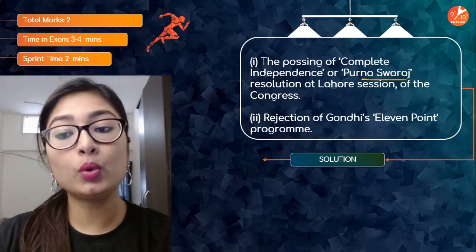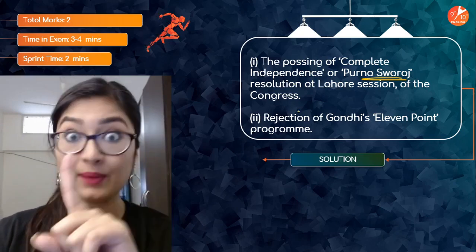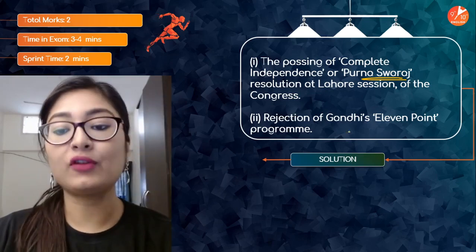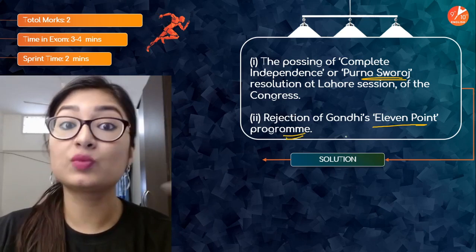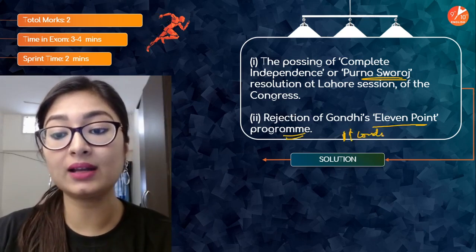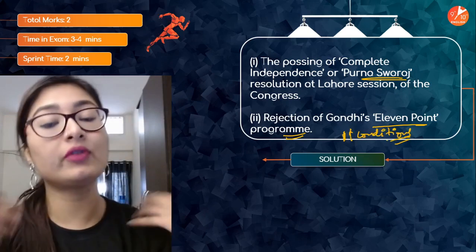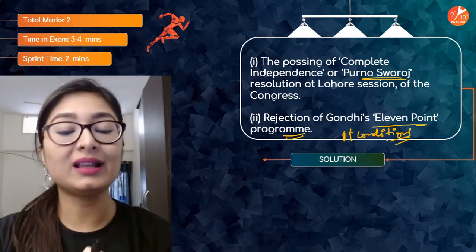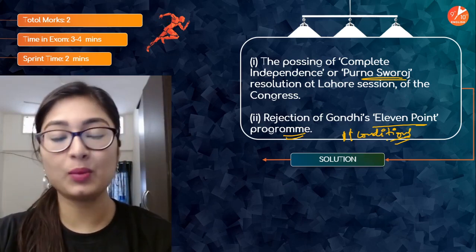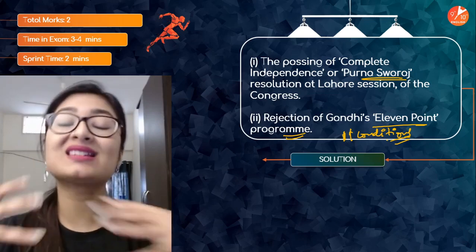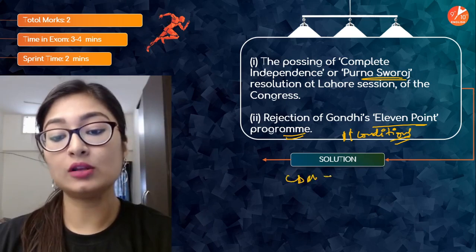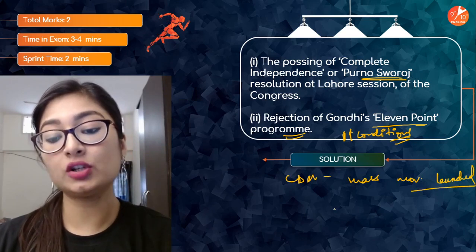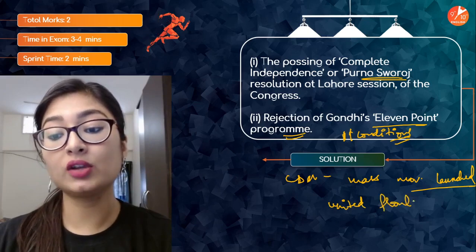You can write any two reasons. The passing of the complete independence or Poorna Swaraj resolution at the Lahore Session of Congress was one major reason — they were now completely demanding that the British be thrown out of the country. Second, of course, the rejection of Gandhi's 11-point program presented to the Viceroy. Gandhi had already warned that if they did not abolish the salt tax he would go ahead with CDM — and they did. CDM was another mass movement launched to bring the whole nation together in a strong united front against the British.